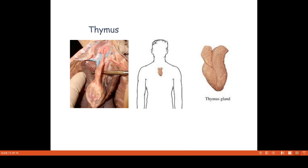These are our primary lymphoid organs. This is the thymus. This is the location of the heart, and this is the shape of the heart — the heart is towards the left side. Thymus is a bilobed structure. This is its location, and this is the original picture of the thymus.